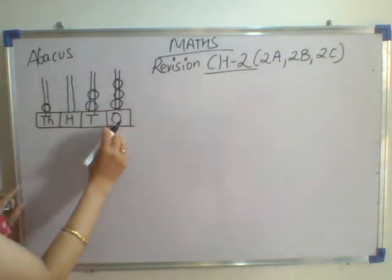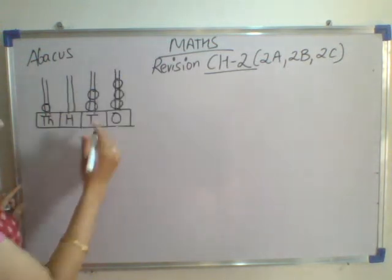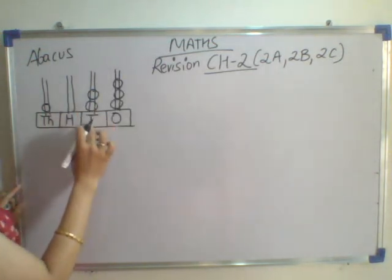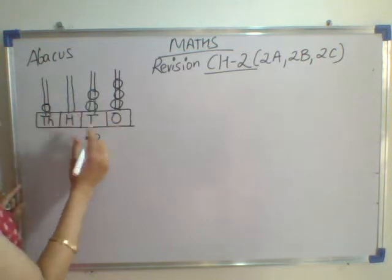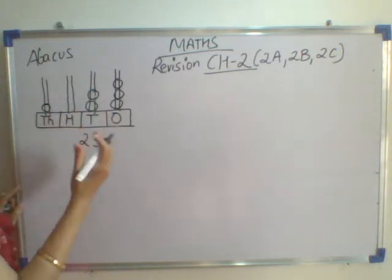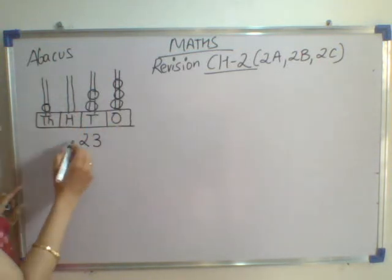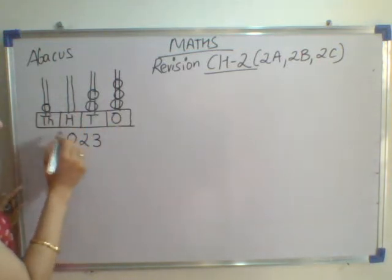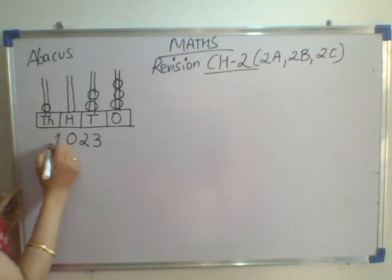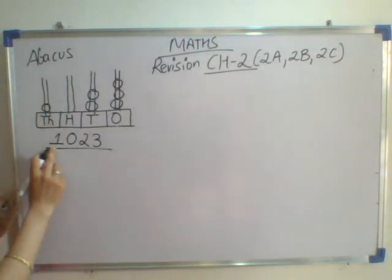We will be starting from the 1s place. In the 1s place, 3 rings are there, so I have written 3. In the 10s place, 2 rings, so I have written 2. In the 100s place, no ring, so 0. And in the 1000s place, 1 ring. So the number is 1023.